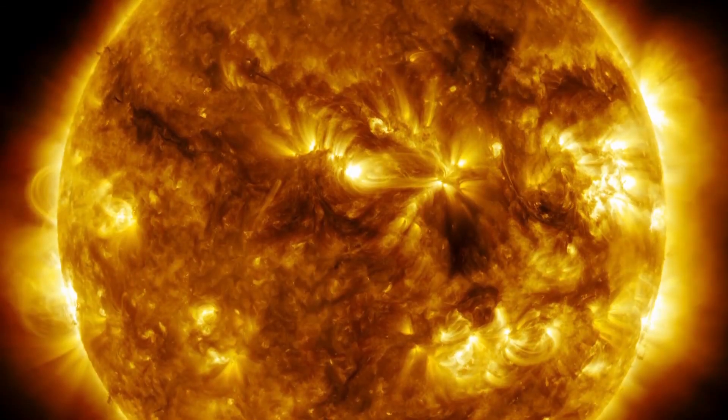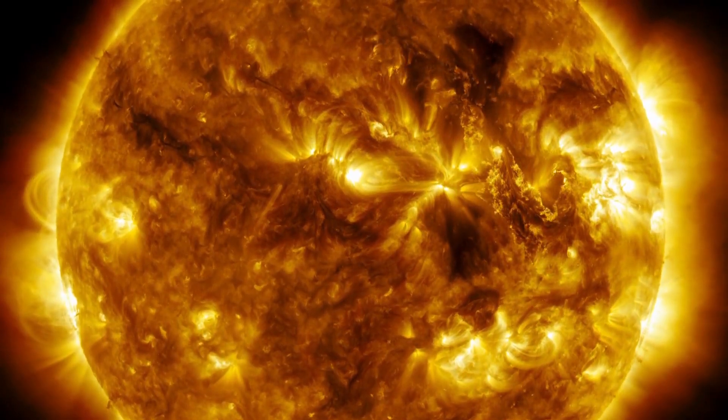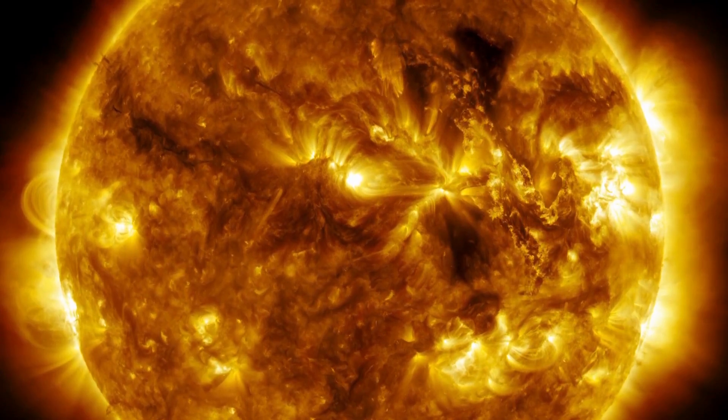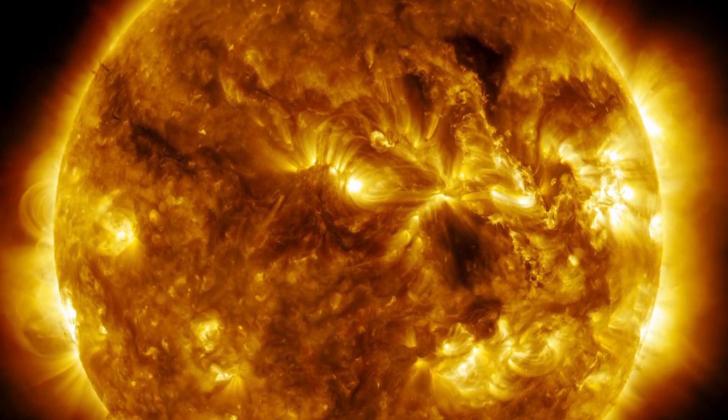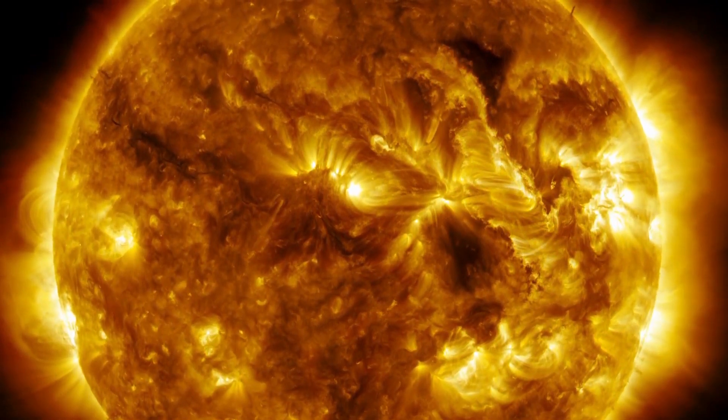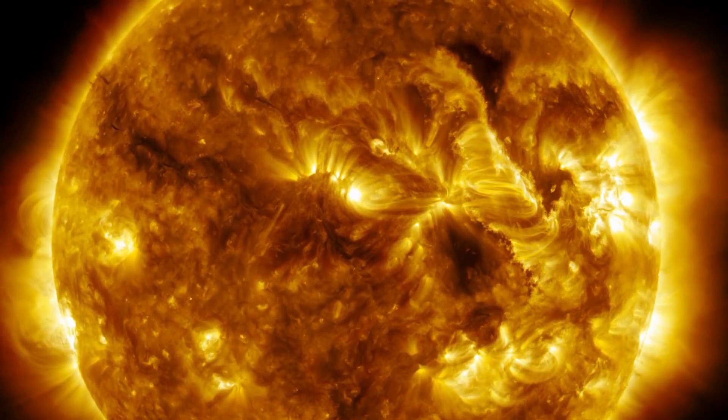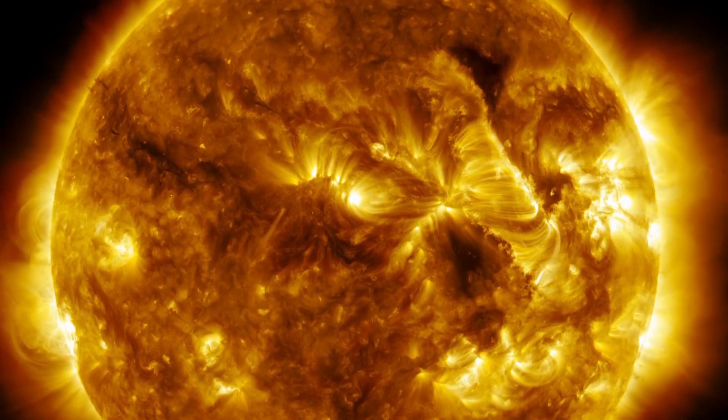The sun's energy source comes from the fusion of hydrogen into helium. During this process, two hydrogen atoms combine in a collision and form a helium atom. As long as the star has enough hydrogen to carry out the fusion, it can maintain its brightness.